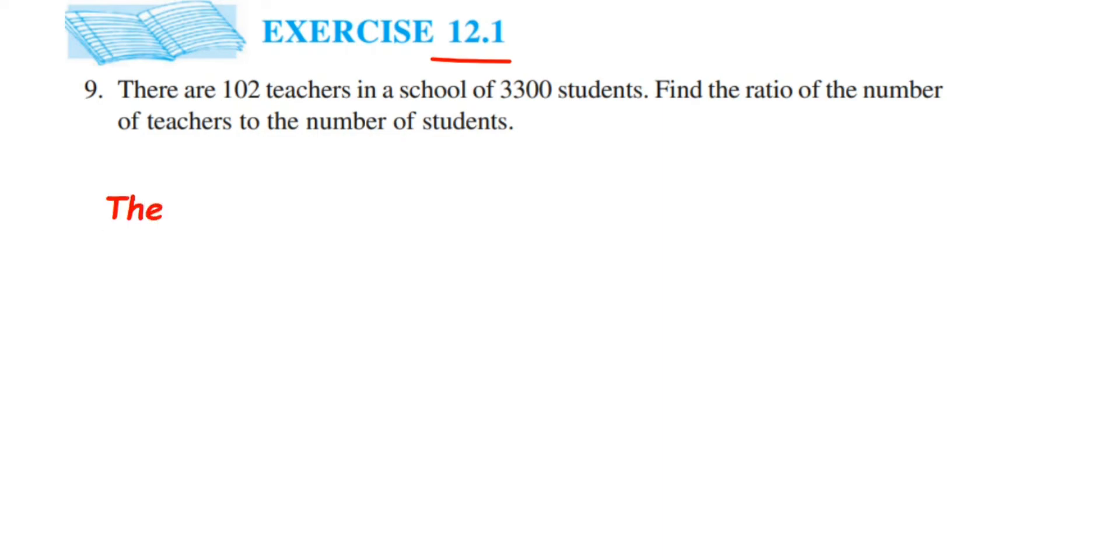So the number of teachers is equal to 102. And same way we have to find out the number of students here. So the number of students are 3300. And now we have to find out the ratio here.